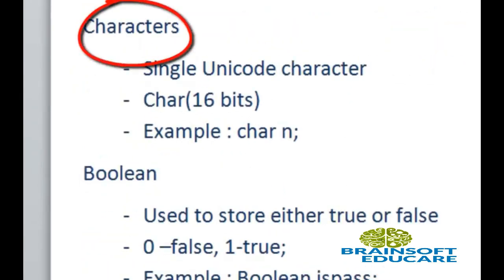Character. A character data type is used to store single Unicode characters. char is used only for storing single characters. char occupies 16 bits memory. This is the example of character data type.